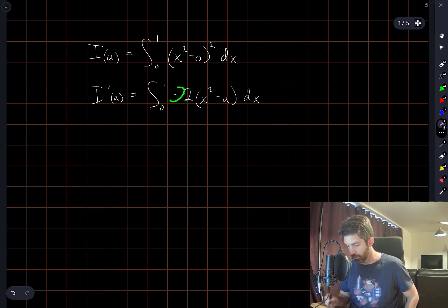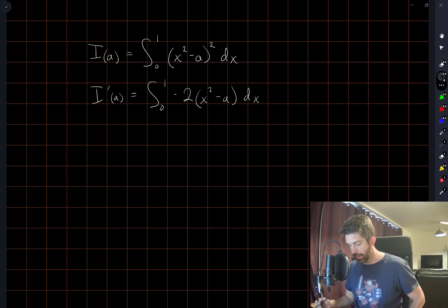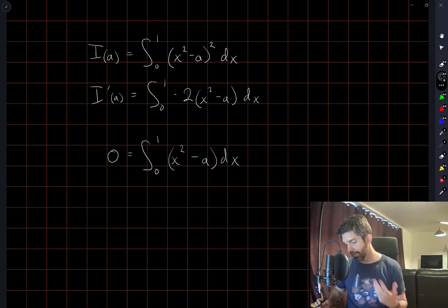And in order to find a critical point, in order to find a value of a which minimizes this, we have to set this equal to 0. Now I've of course cancelled off the negative 2 immediately here.